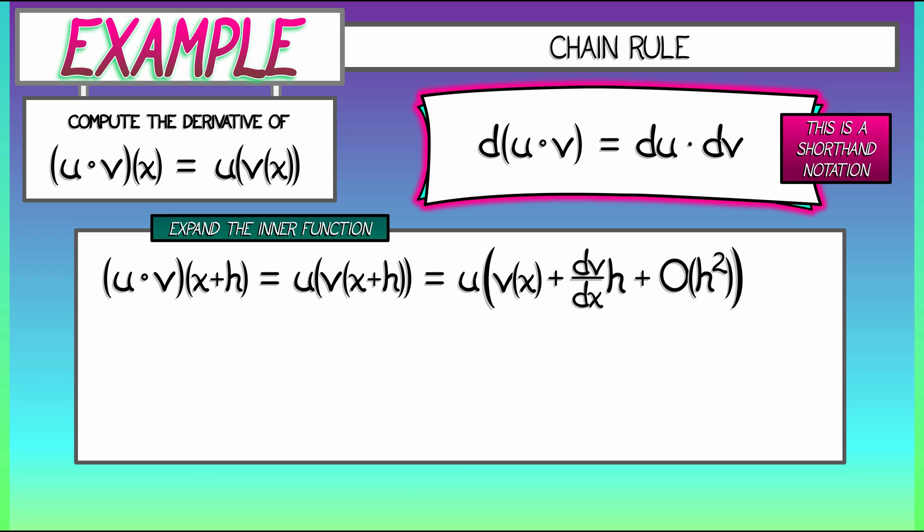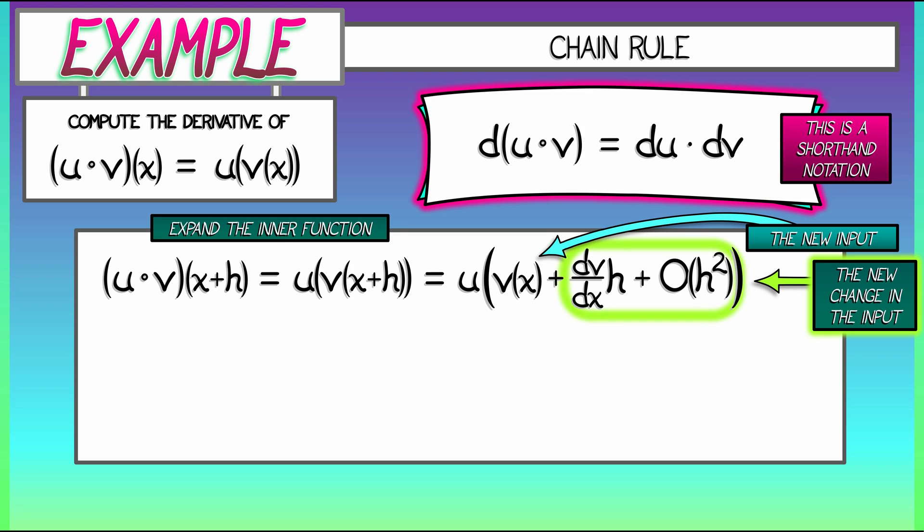Now comes the part where you need to be careful. We're going to expand u, but notice, what is the input to u? It's not x, it's v of x. And the perturbation to this new input is all the remaining terms, so dv/dx times h plus big O of h squared. That together is the perturbation to this function u at the input v.